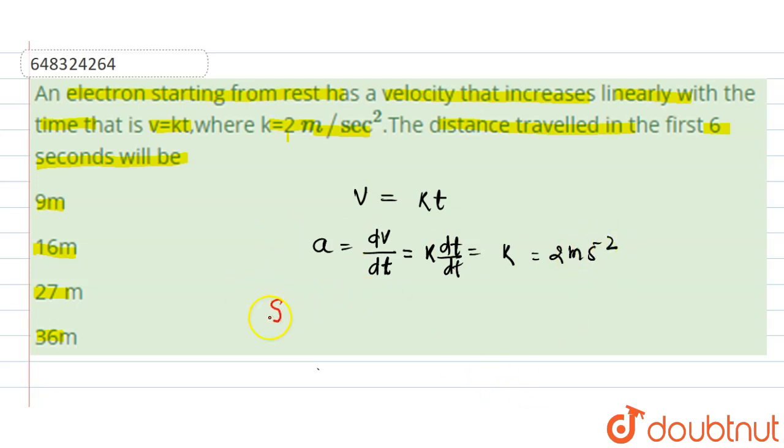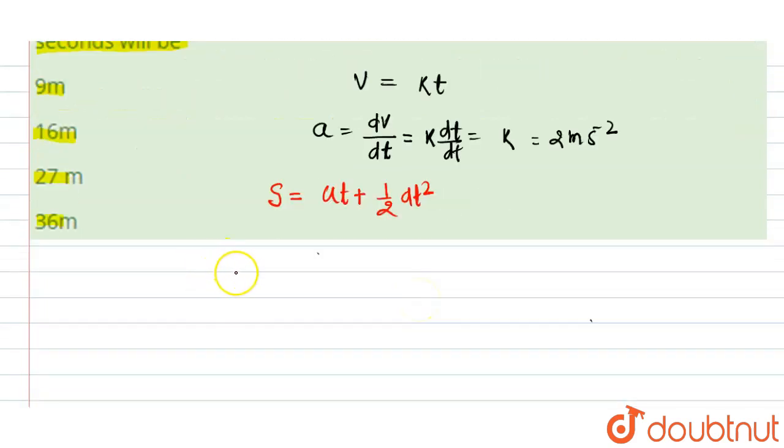Now we know that displacement s = ut + ½at². Time is given here as 6 seconds. So displacement will be s = 0 (initially it was at rest) plus...